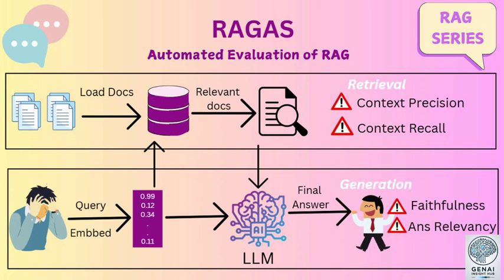We've been talking about RGAS for evaluating AI systems that use external information, but how can we use this in our everyday lives? We're interacting with AI all the time. Understanding RGAS can help because it shows us what questions to ask. Ask where the AI got its information, how it knows it's right, and whether it can show you its sources. If it can't answer those questions, that's a bad sign. We can't just trust AI blindly — we have to think critically, like a detective.